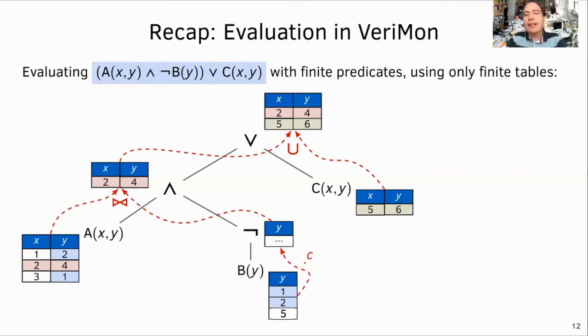The evaluation proceeds bottom-up using table operations, like join, used for concatenation, and table union, which is used for disjunction. The evaluations at the top level of the formula are reported as the monitor's output. Conceptually, it's not the case that every sub-formula has a finite table of valuations. Look at the NOT BY sub-formula, for example. But we ensure that such formulas occur in a finite context, for example, in a conjunction with AXY. And the entire context is then evaluated as a whole.